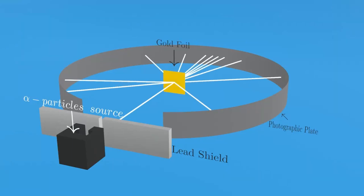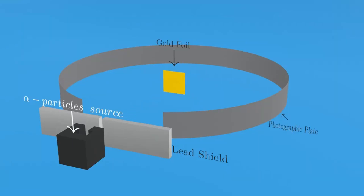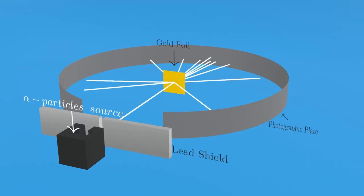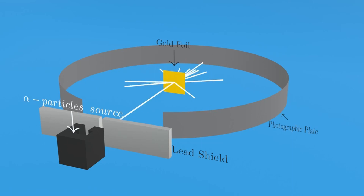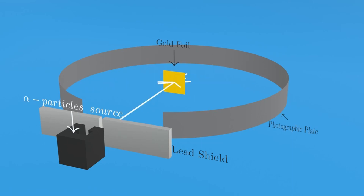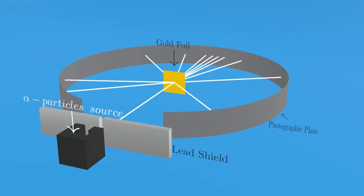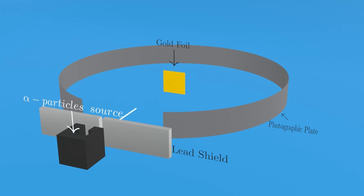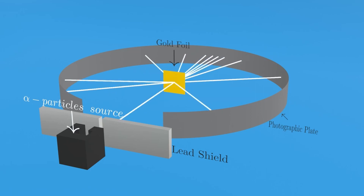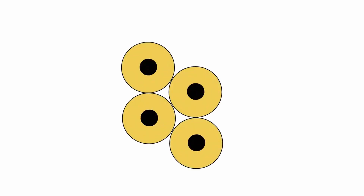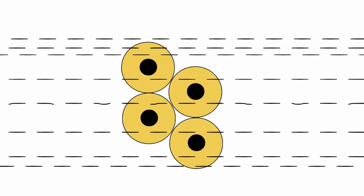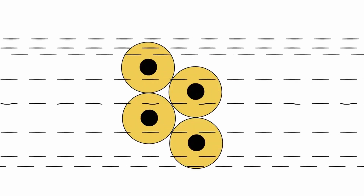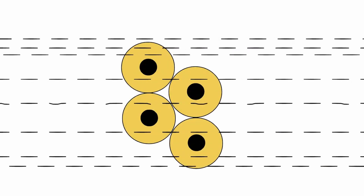Now, you might wonder, what insights can we gain from this experiment? Rutherford keenly observed that the majority of alpha particles, nearly 99%, pass through the gold foil with minimal deviation.